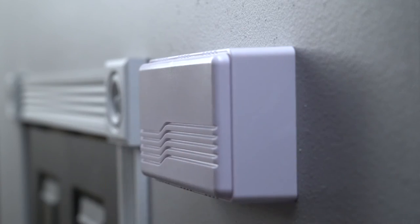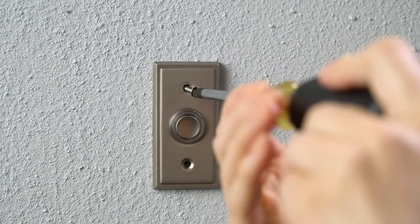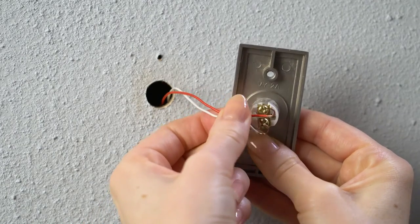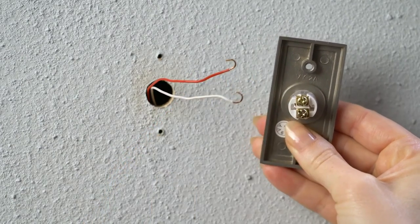Now let's uninstall your existing doorbell button. Unscrew it from the wall and disconnect the wires. We'll need access to those wires, so make sure they don't fall back into the wall.